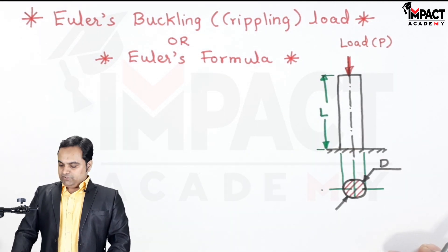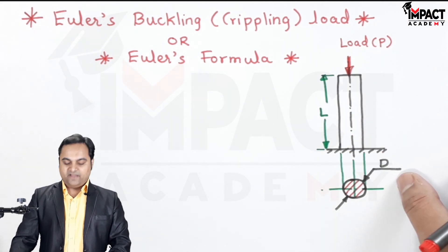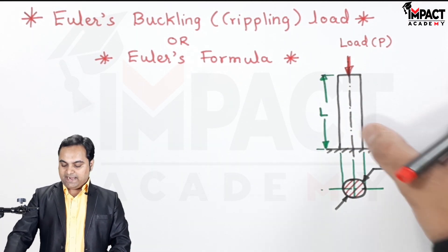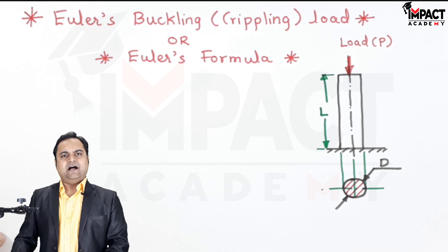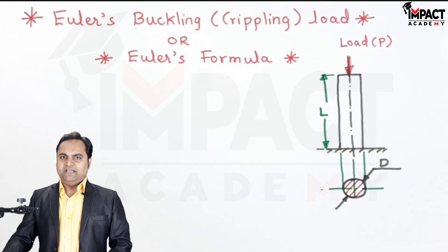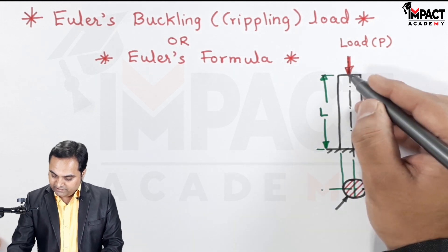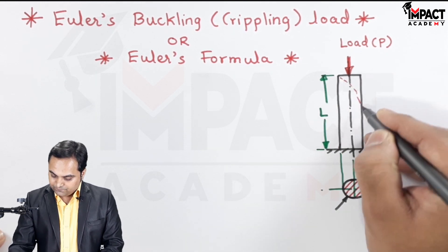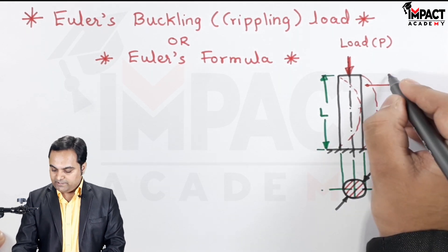Now here there is a column over which an axial load P is applied. The column has diameter D and length L. I'm assuming it to be a circular cross-section, but it can be anything - rectangular cross-section, I section, T section, anything. Now under the action of the load, if the column is bending along the lateral direction, then it is called buckling or crippling.